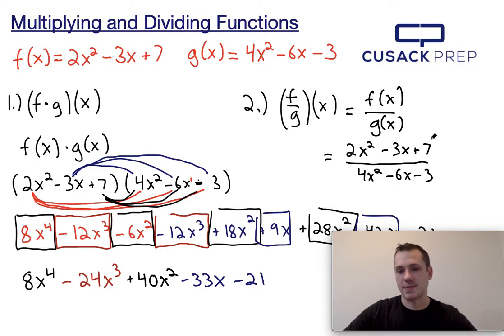You really can't do anything else to simplify. Don't try to cross these x squareds off. Those are called terms. You can't cross terms with each other, only factors. And I don't believe either of these are factorable. So you're not going to be able to do anything to simplify it further.